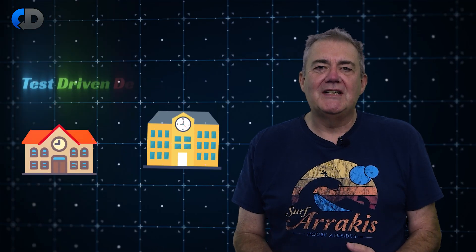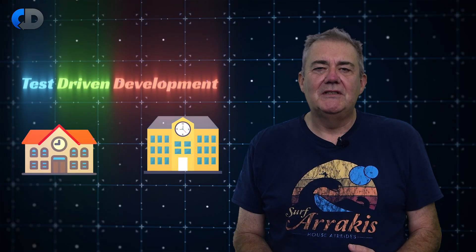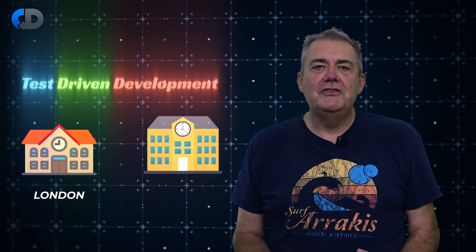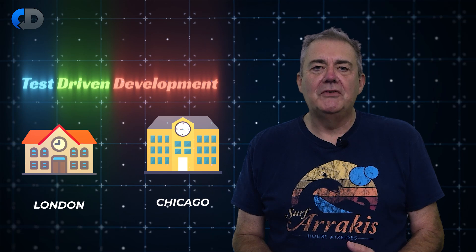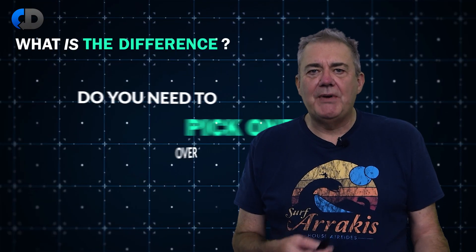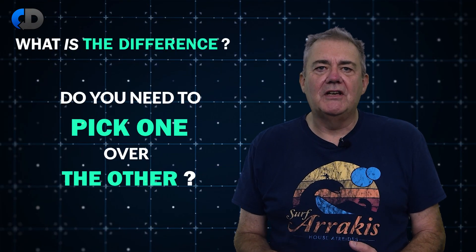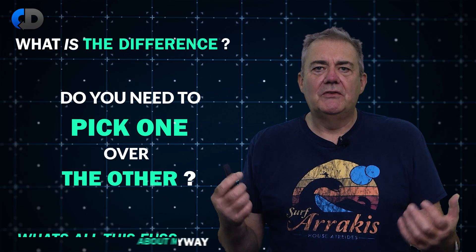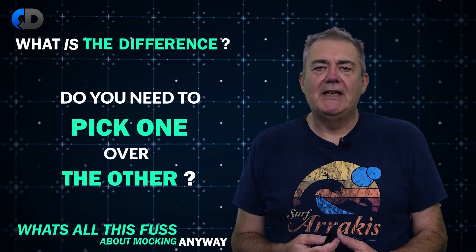There are two schools of thought in test-driven development: the London School and the Classicists or Chicago School. But what's the difference? Do you need to pick one over the other? And what's all this fuss about mocking anyway?